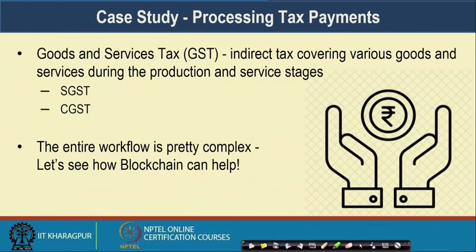Let us start with the first use case: processing the tax payment. The Goods and Services Tax, GST, is an indirect tax which covers various goods and services provided by different service providers or vendors during the production and service stages. GST is levied on different goods or services that you are procuring. GST has broadly two components: the State GST (SGST) and the Central GST (CGST). This entire workflow of GST collection and management is very complex. Let us see how blockchain can help in managing this entire tax with the help of a decentralized ledger platform.